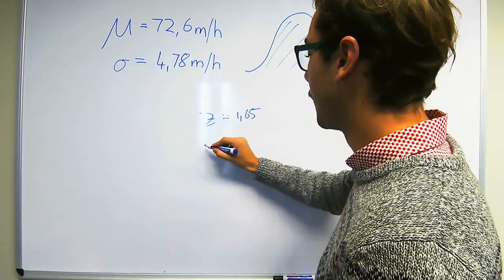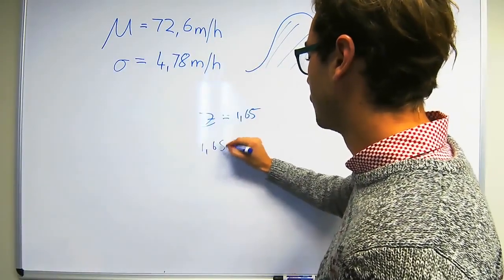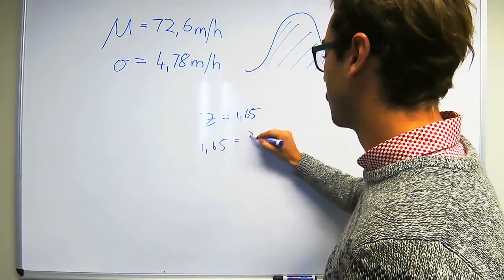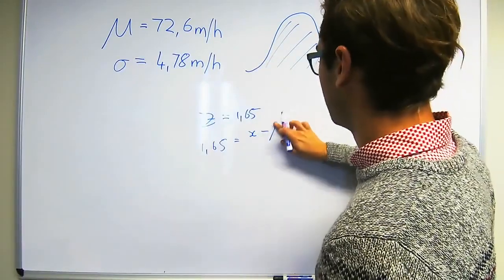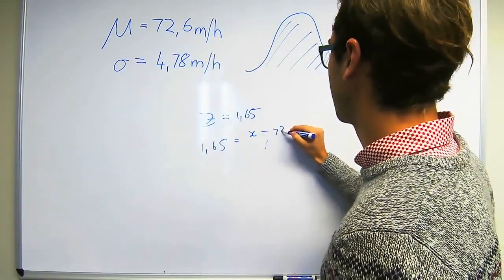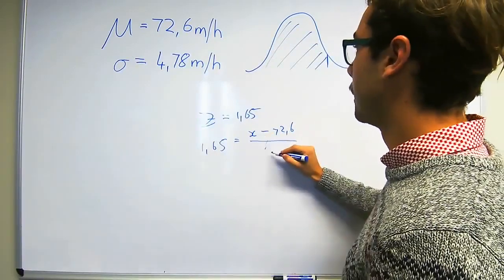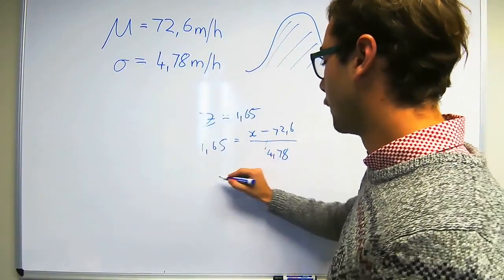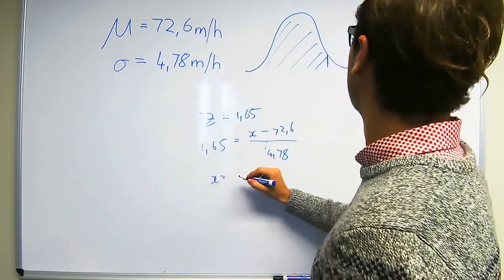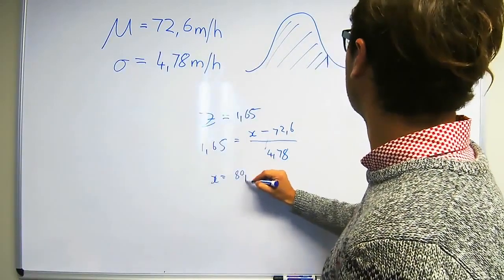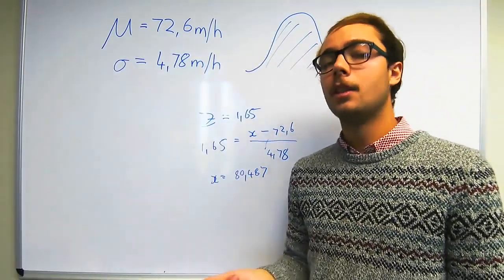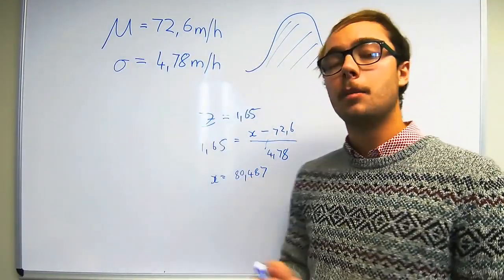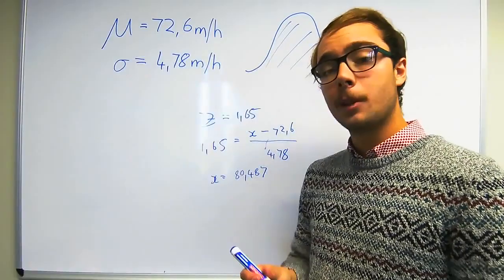If you substitute that into your Z-formula, you have 1.65 is equal to the observation, which is what we're looking for, minus the mean, which is 72.6, over the standard deviation, which is 4.78. If you solve for X, you get 80.487. So the fastest 5% of vehicles travel faster than 80.487 miles per hour.